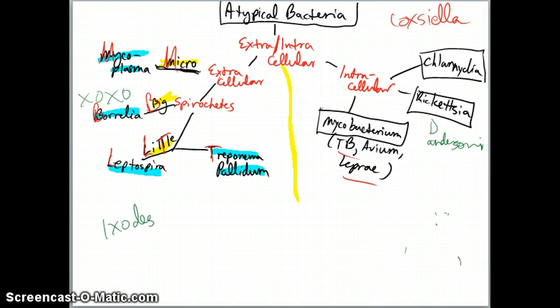Chlamydophila pneumoniae is usually categorized with Chlamydia and causes pneumonia - it's an obligate intracellular as well. Finally, Rickettsia: Rocky Mountain spotted fever, mostly localized to the southeast USA like Tennessee and the Carolinas. The Dermacentor tick (D. andersoni), commonly known as the dog tick, is the vector. It can stain with Giemsa, and has a positive Weil-Felix test. You'll get petechiae on palms and soles, spreading from wrists and ankles to the trunk. Drug of choice is doxycycline. That completes atypical bacteria.